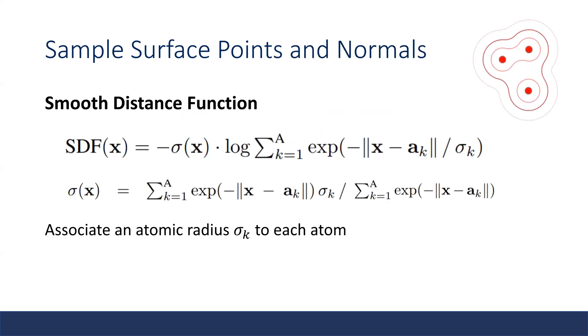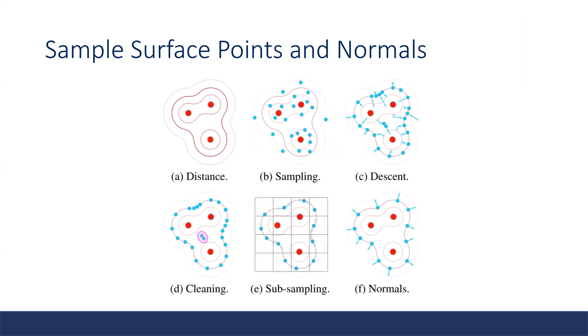The first step is sampling the surface points and their normals. They define a smooth data function that gives a level set surface. If we carefully select a level, we can get a description of the protein surface. We randomly sample points in space and use gradient descent to minimize the distance between the surface point and a specific level surface.